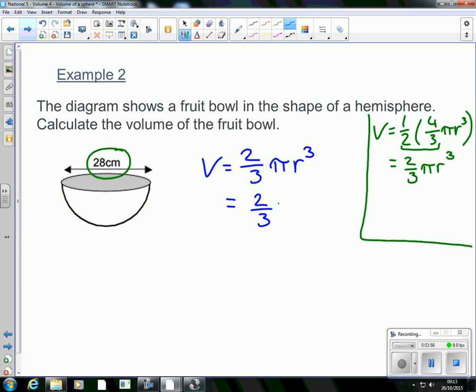So for us to get that radius to put in, all we need to do is half it. So it's 2 thirds multiplied by pi, multiplied by 14 cubed.